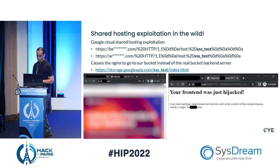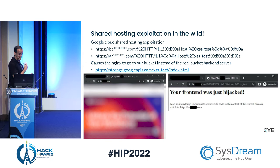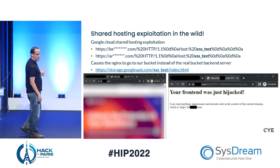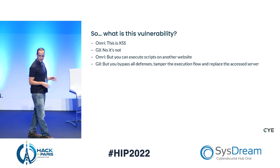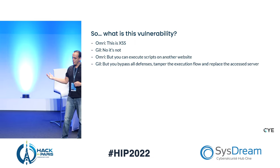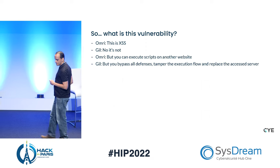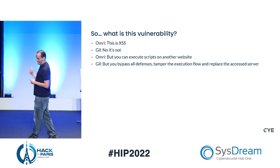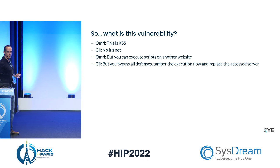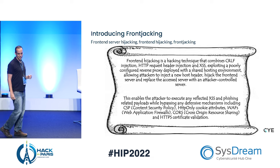This was the proof of concept we created. We searched for it in the wild and found several examples, but for legal reasons I cannot show them as they are still vulnerable. We had an internal debate: my colleague Omri told me 'this is cross-site scripting — a new form.' I said no, it's not. 'But you can execute script on other websites.' I said yes, but you bypass all defenses, tamper the execution flow, and replace the accessed server. And so I introduce to you: front-jacking — front-end server hijacking.